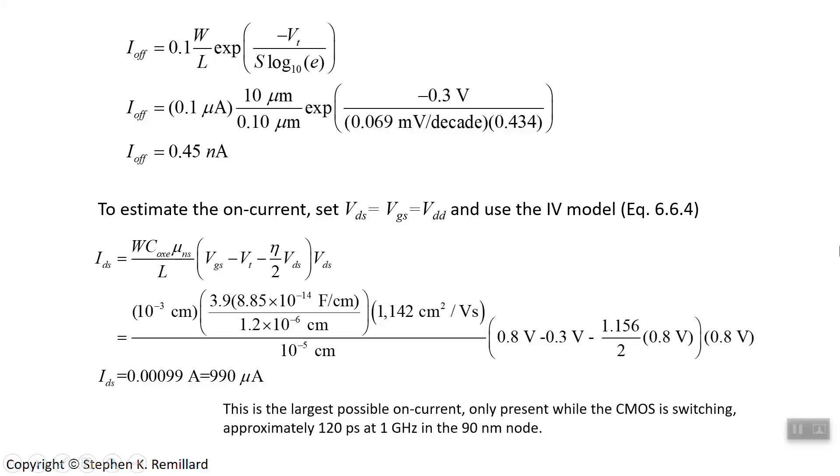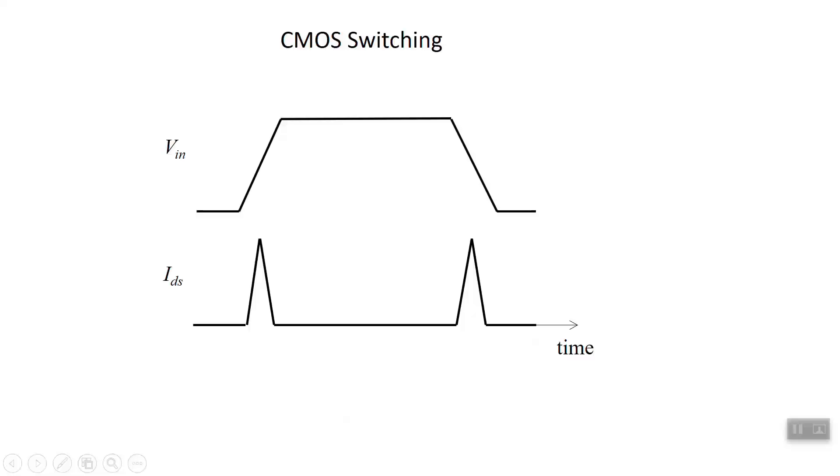But you know a CMOS switch operating at one gigahertz is on for 10 or 12 percent of the time and so you might have 100 to 120 picoseconds where current can flow. It just never rises to this level. I think it kind of looks like this: if the CMOS is switching, there's a CMOS switching on and then now it's switching off. So the MOSFET switching on, the MOSFET switching off, it's only during those switching operations that any current can be drawn.